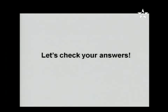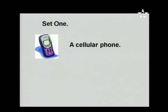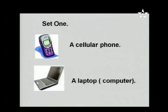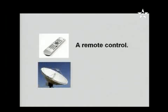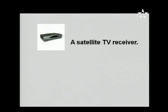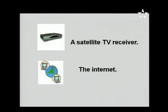Okay, let's check your answers. Set one: this is a cellular phone. Next is a laptop computer. Next one is a remote control. This is a satellite dish. Next, this is a satellite TV receiver. And of course, this is the internet.